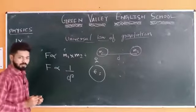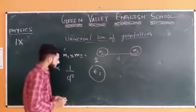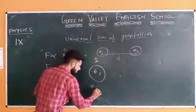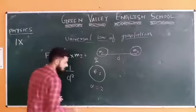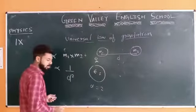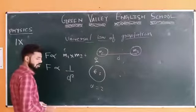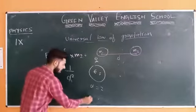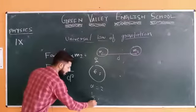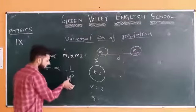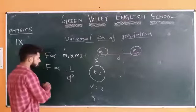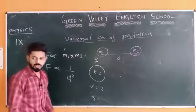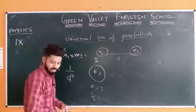F is inversely proportional to the square of distance between them. So if you double the distance, your force will become one-fourth. If you halve the distance, your force will become four times — actually, if you halve the distance, your force becomes four times; if you double it, it becomes one-fourth. This is the concept behind it.